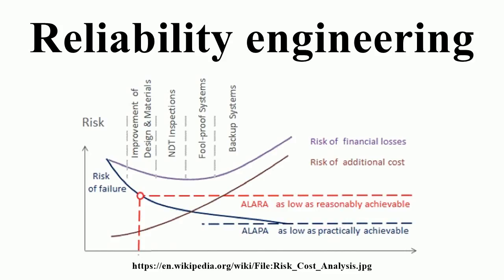By the 1990s, the pace of IC development was picking up. Wider use of stand-alone microcomputers was common, and the PC market helped keep IC densities following Moore's law, doubling about every 18 months. Reliability engineering was now changing more towards understanding the physics of failure. Failure rates for components kept dropping, but system-level issues became more prominent. Systems thinking became more and more important. For software, the CCM model was developed, which gave a more qualitative approach to reliability.